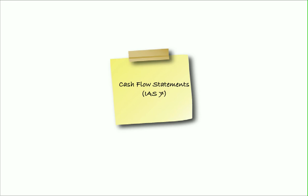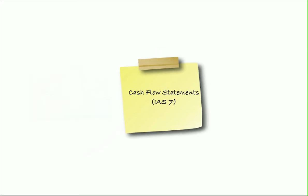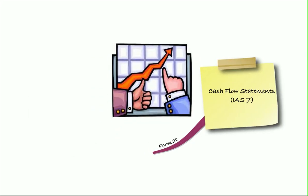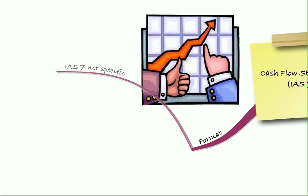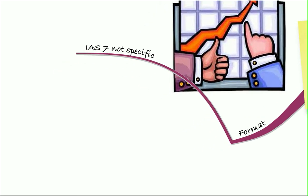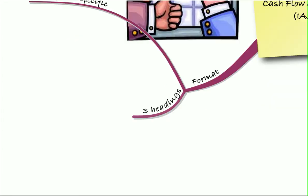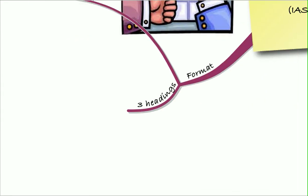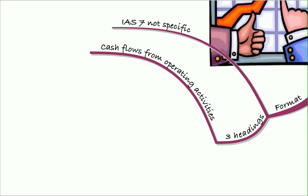Hello and welcome to our recap of the lecture on cash flow statements. First, we look at the format of the cash flow statement. Remember, it's under IAS 7 and it's not specific—it doesn't give us a detailed format. What it does is give us three headings to work with. The first heading is cash flows from operating activities.